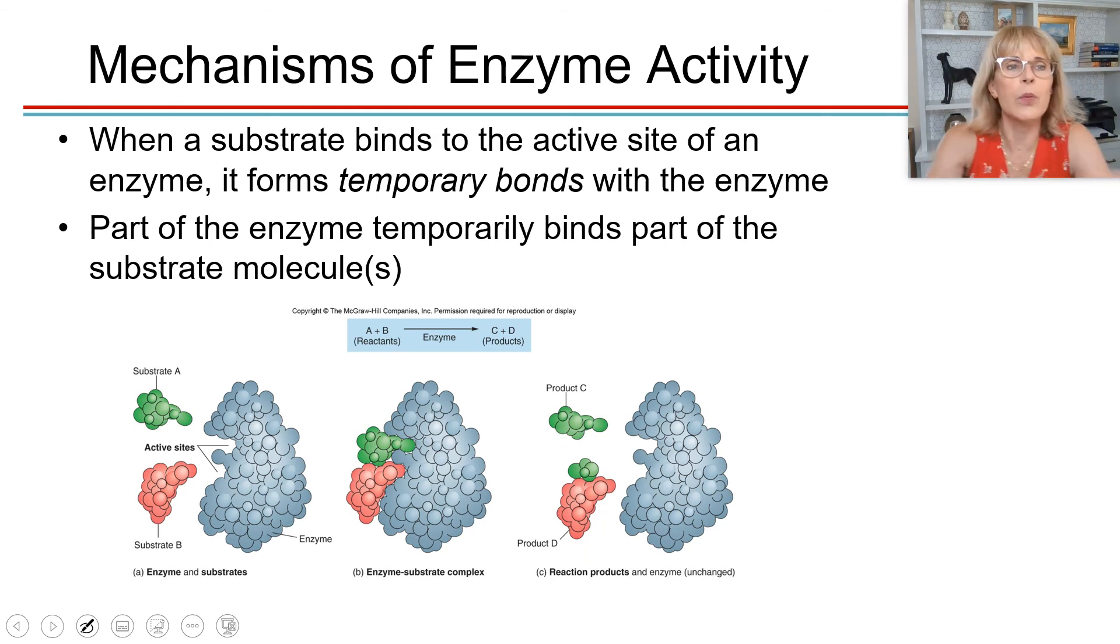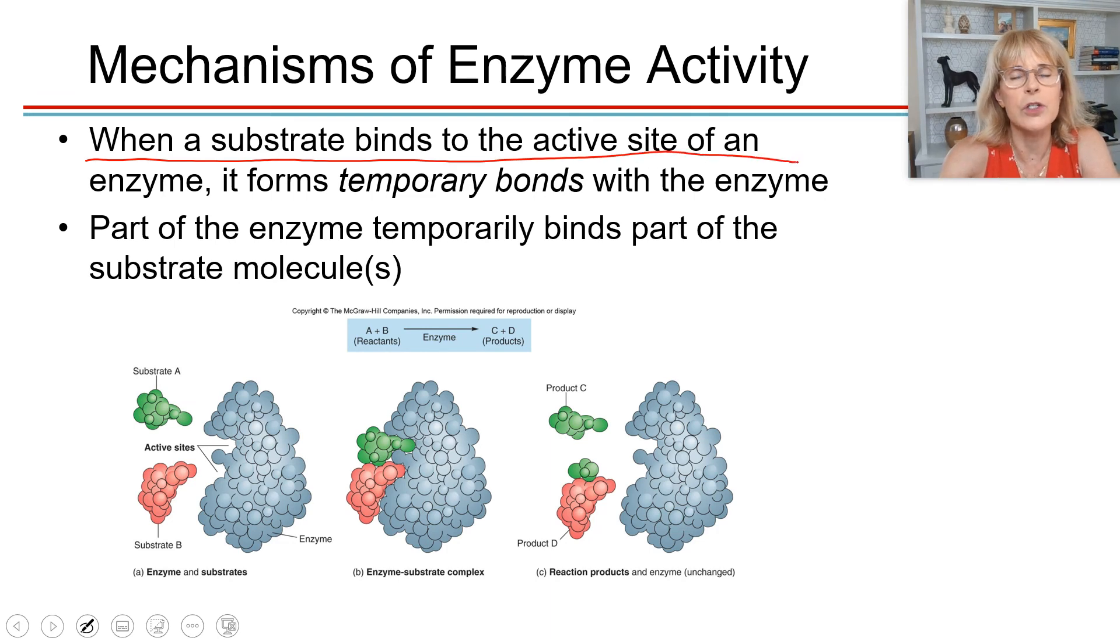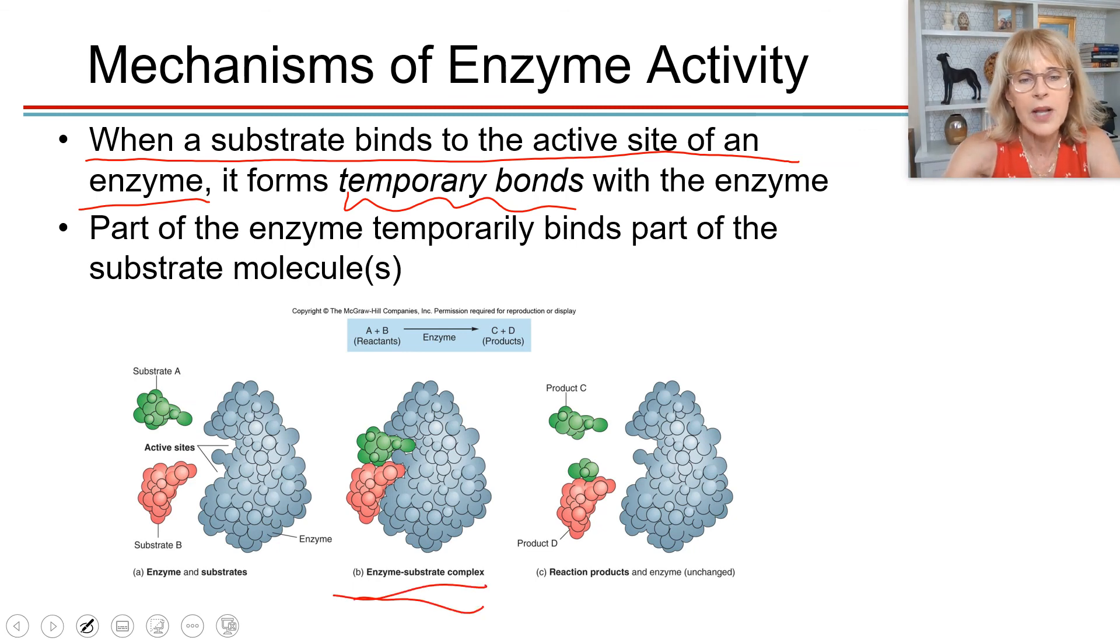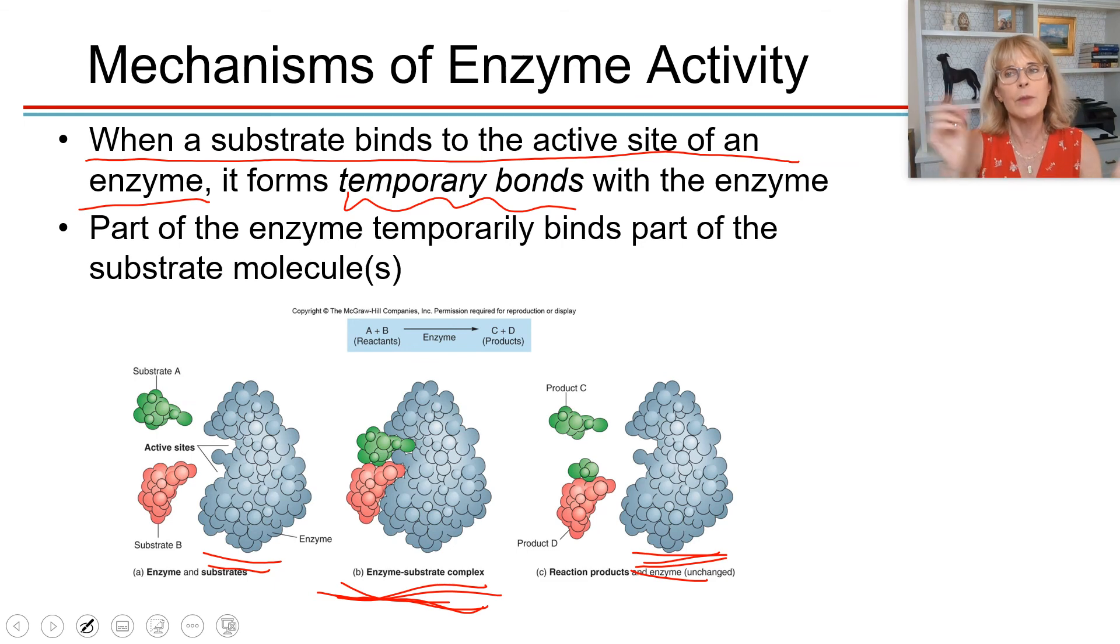I already told you this as well, but when a substrate binds to the active site of an enzyme, it's going to form temporary bonds. And so temporarily, they're going to be a single molecule, just for like this long, because it only takes a millisecond before they switch things, and boom, they leave off with the products. And once they leave off with the products, they let go of the products. So you've got your robot at the beginning, you've got your robot at the end. In the middle, he became a part of an enzyme-substrate complex. So part of the enzyme temporarily binds parts of the substrate molecules.